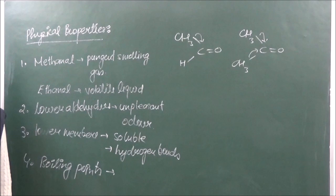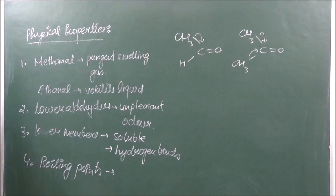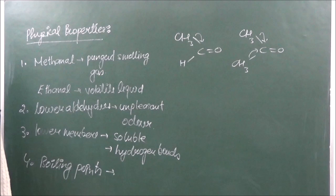Looking at dipole moments: methanone (acetone) has a dipole moment of 2.52 D and propenone has 2.88 D. Therefore, the boiling points of ketones are going to be higher. These are the physical properties of aldehydes and ketones.